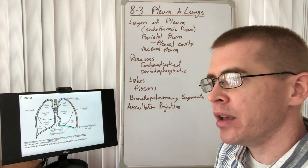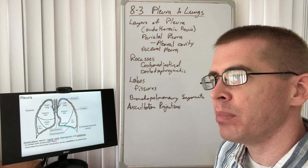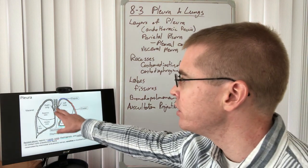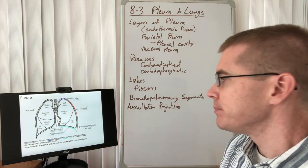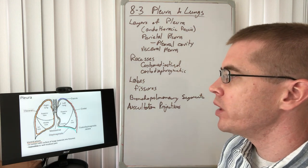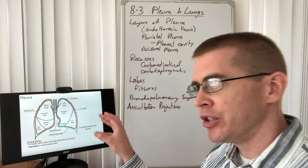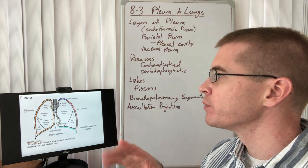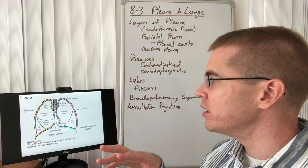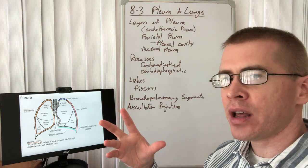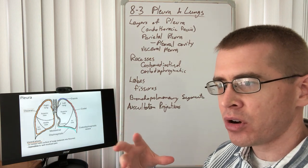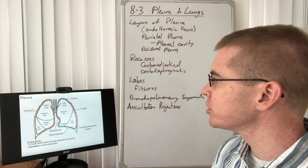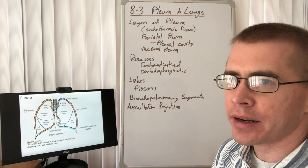The parietal pleura is sensory innervated by segmental arteries, the intercostal arteries, as well as some portions of the phrenic artery along the midline. Moving deeper, we have the visceral pleura, which is adherent to the surface of the lung. Between the parietal and visceral pleural layers, you have a space called the pleural cavity. Just like the pericardial cavity, this contains a small amount of fluid to facilitate the movement of the lungs. The visceral pleura is not innervated.